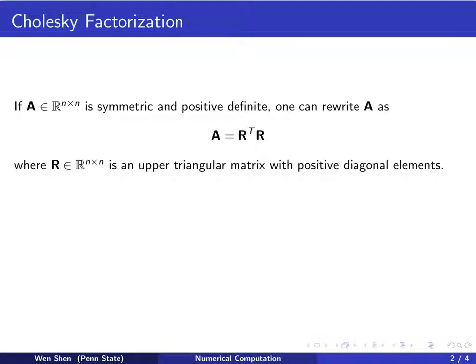We consider a square matrix A which is symmetric and positive definite. Positive definite means all the eigenvalues are strictly positive.